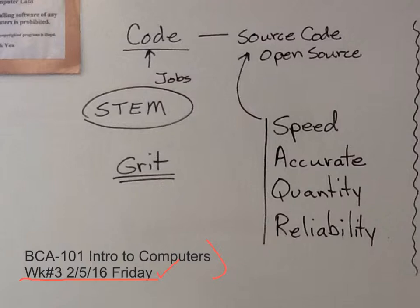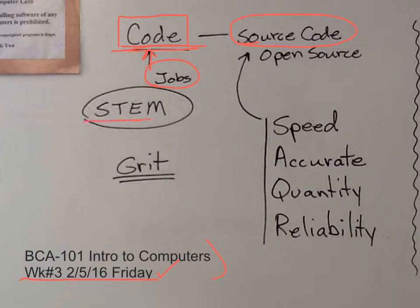Today we started out talking a little bit about code from our previous outline. We talked about source code and writing code. Lots of people responded in the outline to the advantages of being able to code. We talked a little bit about jobs and we talked about STEM.